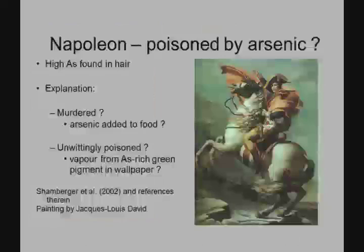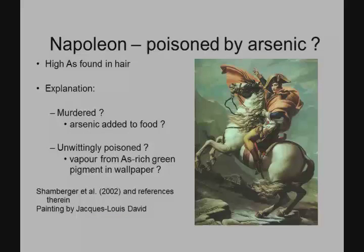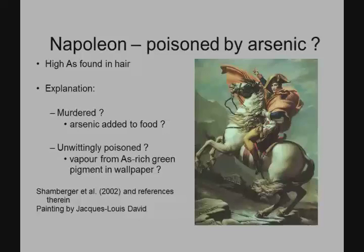Arsenic is a pretty bad poison throughout literature. We know certain people have died of arsenic — it's used in rat poison. Napoleon's hair was analyzed and high arsenic concentrations were found. It was thought he'd been poisoned by arsenic, perhaps added to his food, or perhaps from his beautiful green wallpaper — the pigment of which was made from an arsenic-bearing mineral. When the wallpaper gets moldy, a reaction releases arsenic as a gas. That's one way Napoleon may have been poisoned.